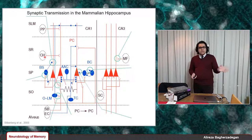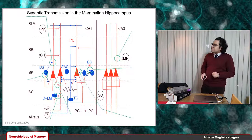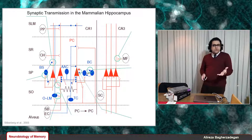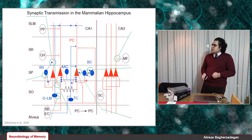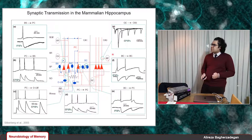Finally, the last type of synaptic transmission is inhibitory-to-inhibitory connections. For instance, two basket cells form inhibitory-to-inhibitory connections because both are inhibitory, and when they make synaptic connections with each other they produce inhibitory-to-inhibitory signals and are involved in disinhibitory connections as well. We have both inhibitory-to-inhibitory chemical synapses and inhibitory-to-inhibitory gap junctions.